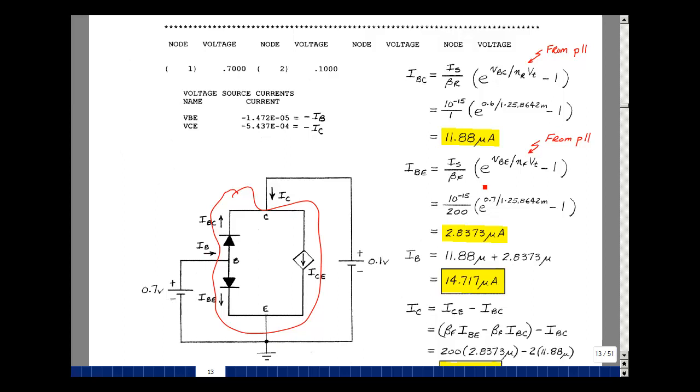Likewise, I can get I sub be by using my equation from page 11, but now this is 0.7. Eta f is 1, and then V sub t is 25.8642 millivolts at room temperature. I sub s was 1 femtoamp, and beta f was 200. So I get 2.8373 microamps.